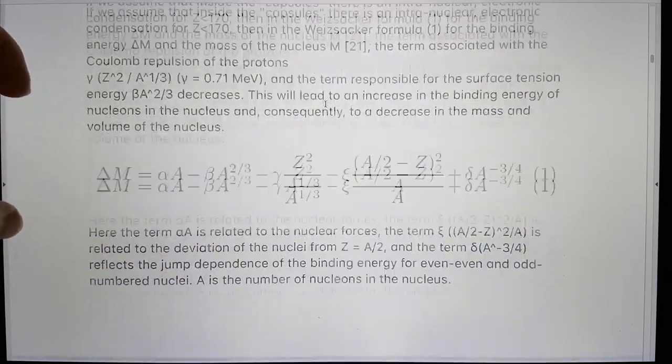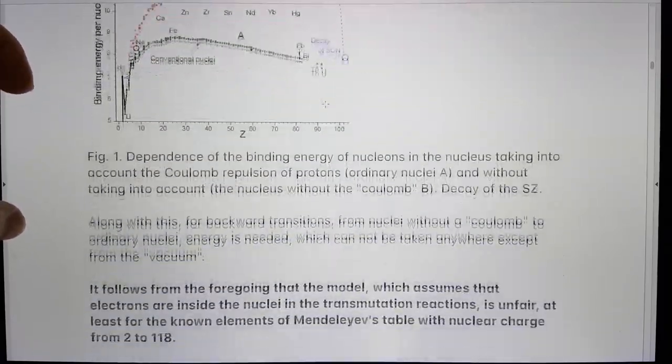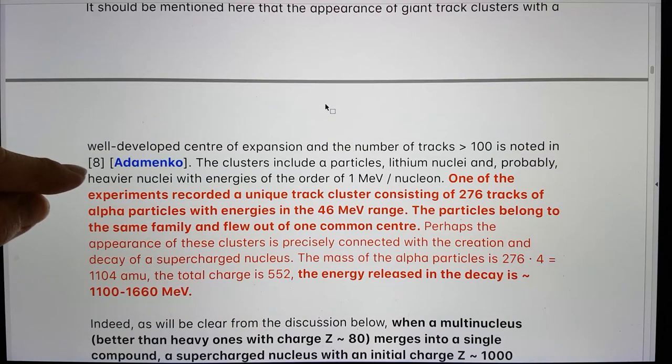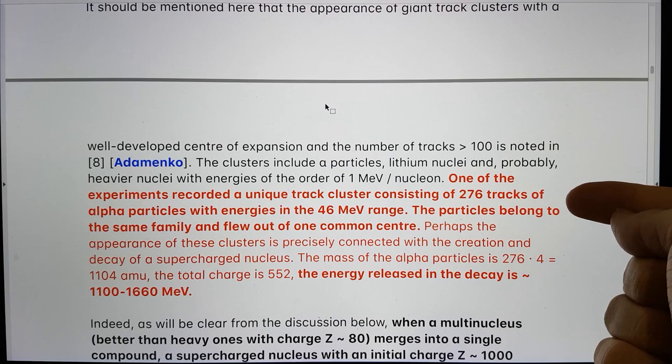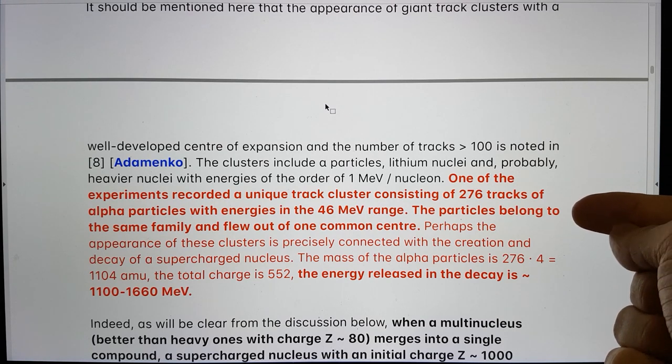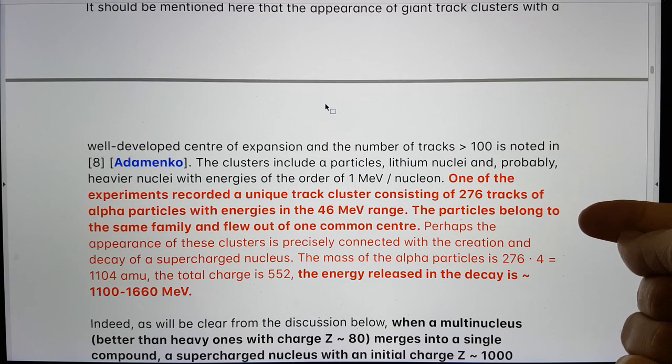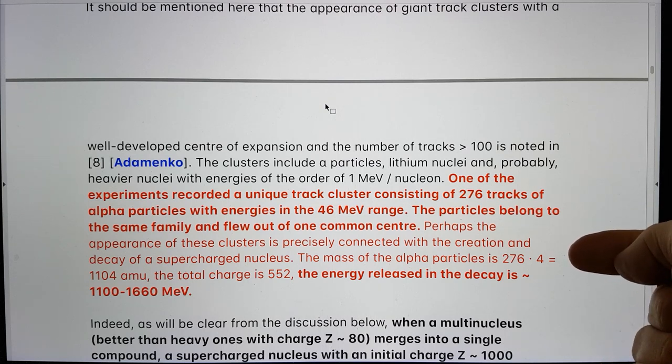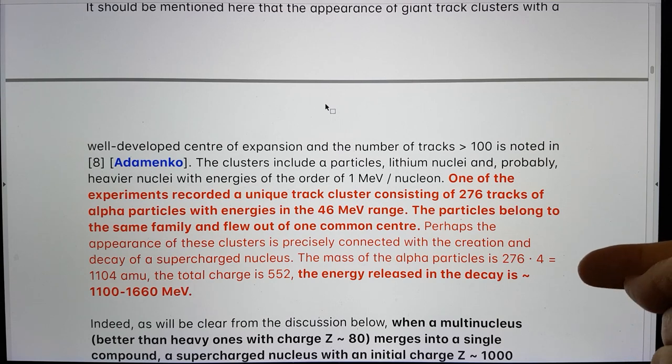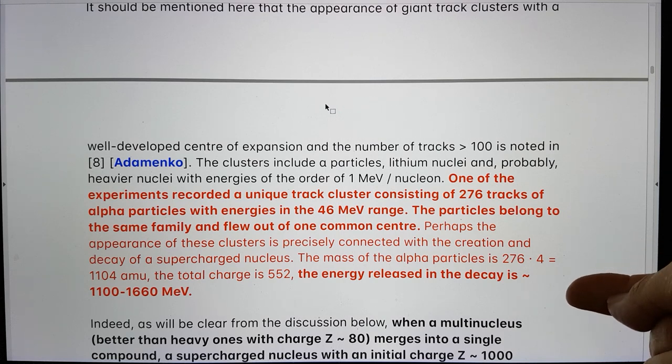He's picking out work by Adamenko who I've talked a lot about, and he's saying one of the experiments recorded a unique track cluster consisting of 276 tracks of alpha particles with energies in the 46 MeV range. The particles belong to the same family and flew out of one common center. The mass of the alpha particles is 276 times 4 equals 1104 AMU. The total charge is 552. The energy released in the decay is 1100 to 1660 MeV.